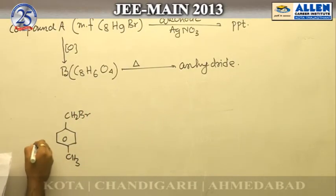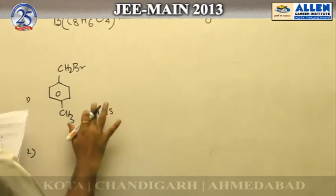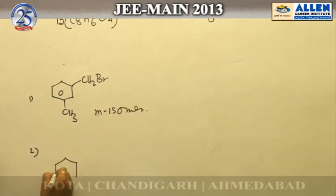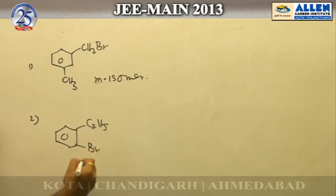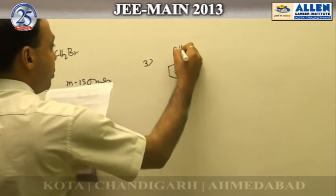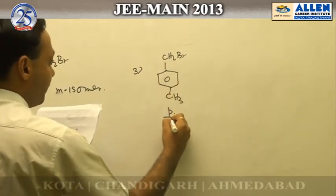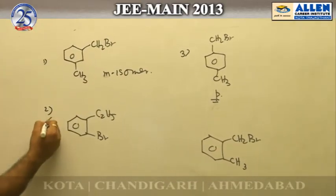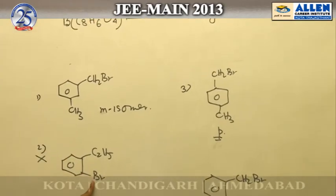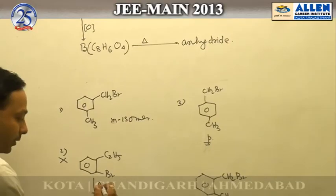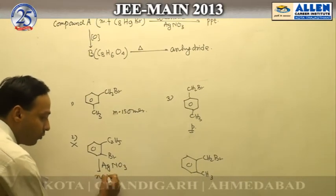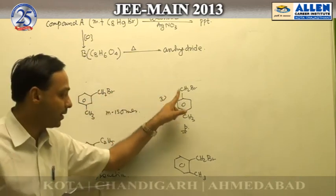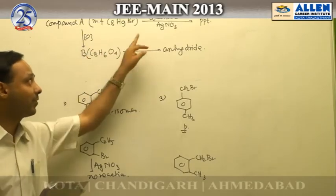The options are: CH2Br meta isomer, C2H5Br, CH2Br para isomer, and CH2Br another isomer. The option with C2H5Br cannot be correct because silver nitrate cannot react with vinylic bromide — the phenyl carbocation is unstable, so no reaction occurs. Since the remaining options are all allylic bromides, all of them react with silver nitrate, so from that point all three can be the correct answer.